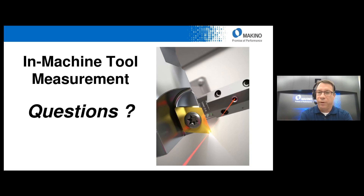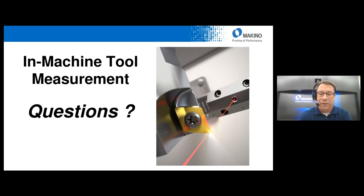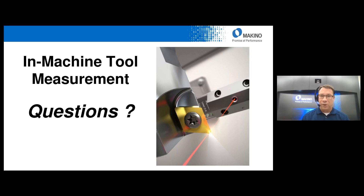I do have a number of questions that have come in today. First question: is it possible to add a laser unit to a machine that I already have? Speaking for Makino, yes, it is possible to add that after the fact. These are typically set up as retrofit options, so they can be added after the fact — we would quote that through our aftermarket parts group. Second question: what's the approximate price of the Vision Tool Sensor on a new Makino? That's actually included in the base price of the machine.